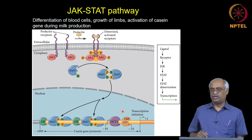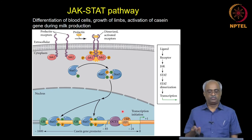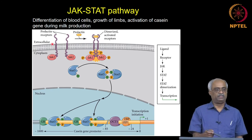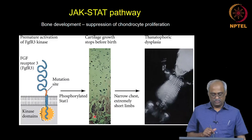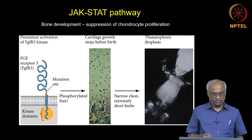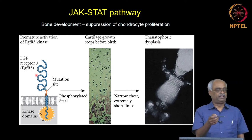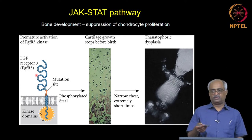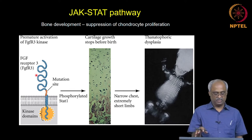This kind of regulation works in the example of the casein gene during milk production - prolactin binds to the receptor and leads to STAT activation. Here is an example of a mutant condition: a mutation in the extracellular domain of FGF (fibroblast growth factor family), where we saw RTK and now we are seeing STAT as a small variation on the same group.